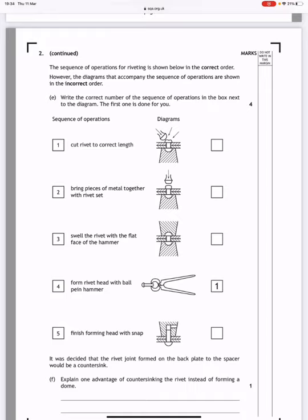Form the rivet head with a ball-pane hammer, that's the very top diagram. You can see the round head of the ball-pane hammer hitting at an angle to create the round head. Then finish forming the head with the snap. That's the third one down, where we use a snap underneath and on top to finally form a nice round shaped head to the rivet.